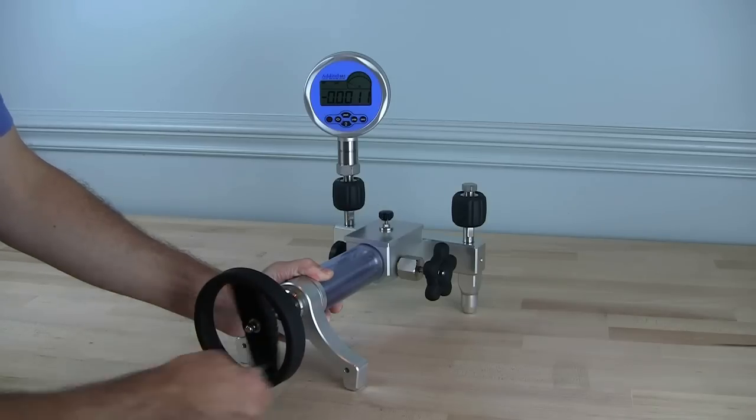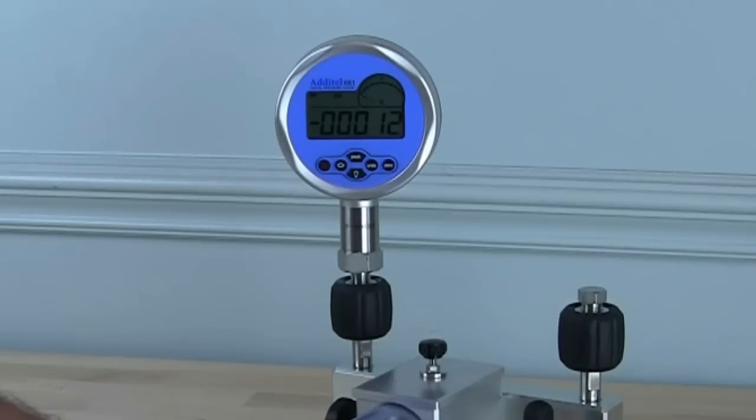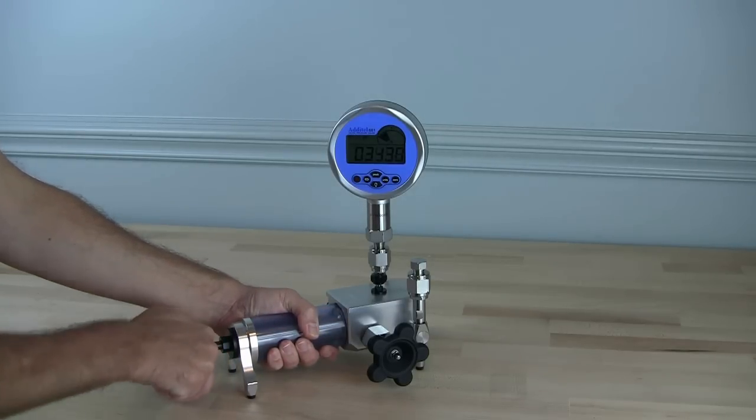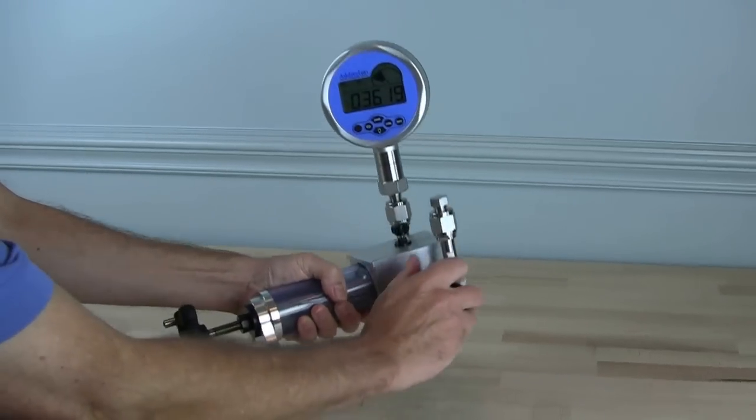Both pumps can also generate minus 12.5 PSI of vacuum by rotating the variable volume screw press counterclockwise. The ADT925 weighs only 3.8 pounds and is ideal for portable applications.